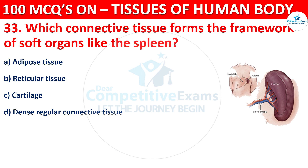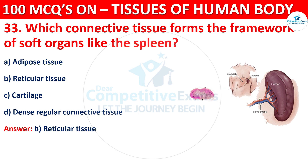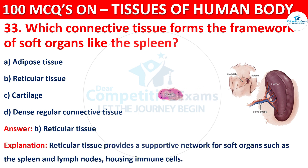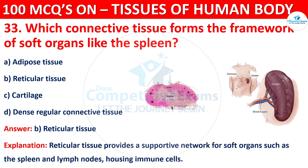The correct answer is B, that is Reticular Tissue. Reticular tissue provides a supportive network for soft organs such as the spleen and lymph nodes, housing immune cells.